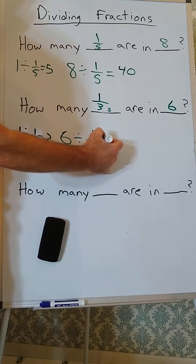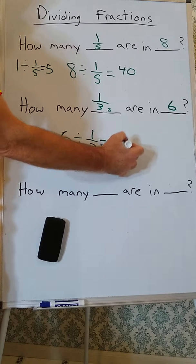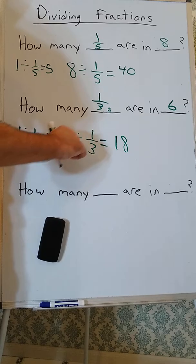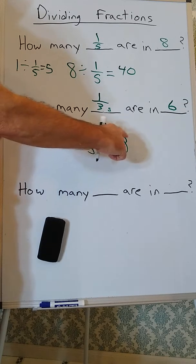So, we have 6 times 3, or there are 18 thirds in 6. 6 divided by 1 third is 18.